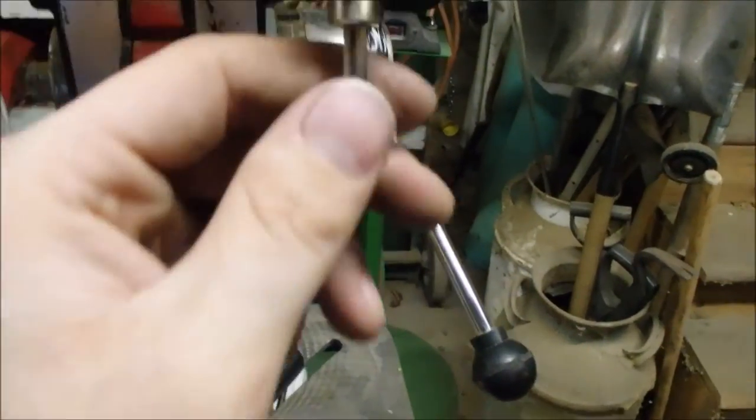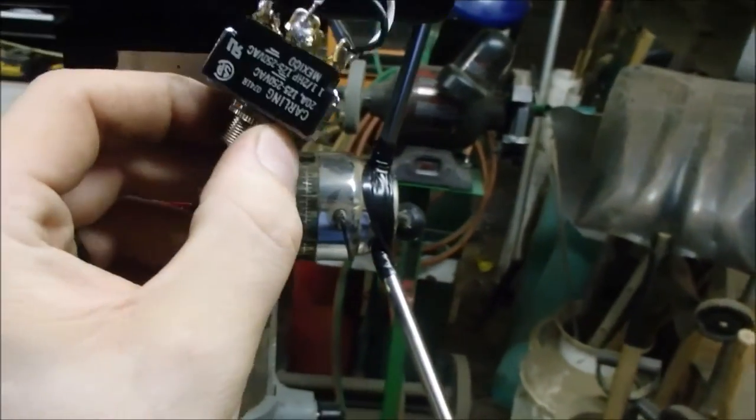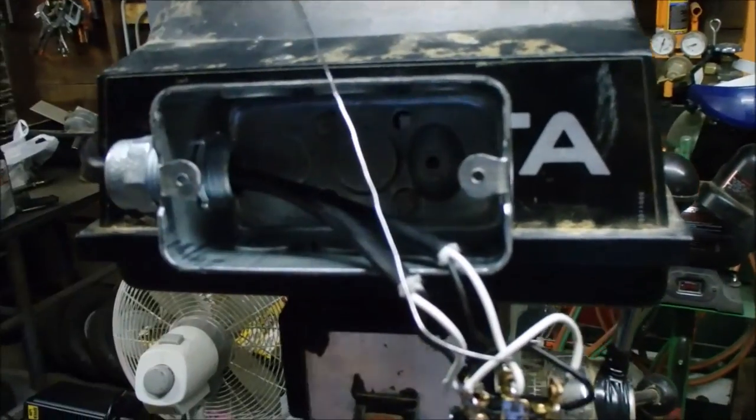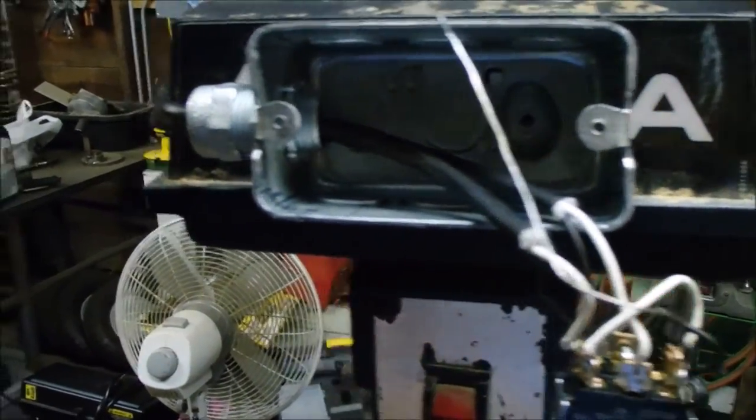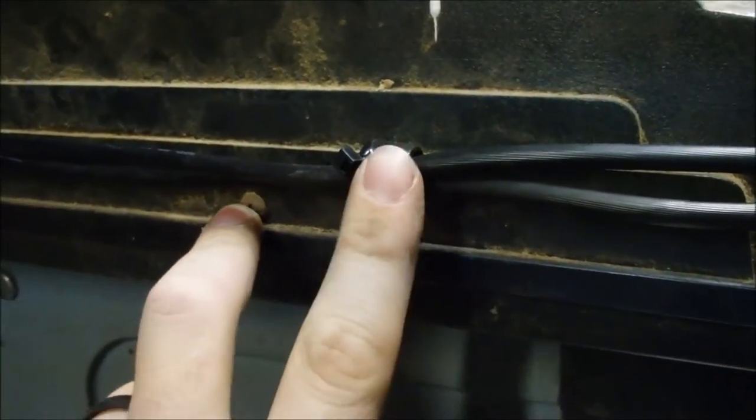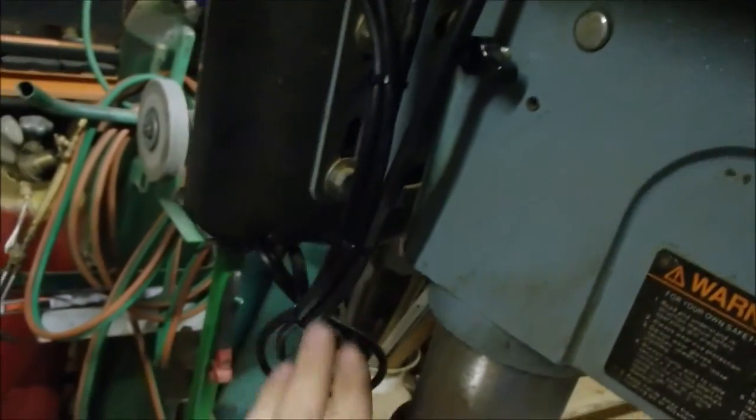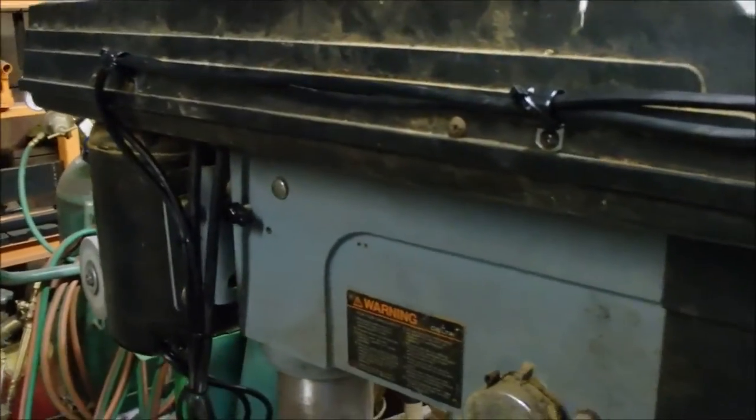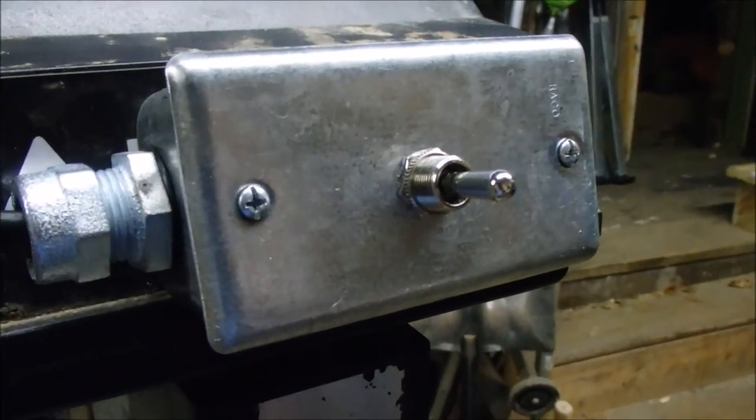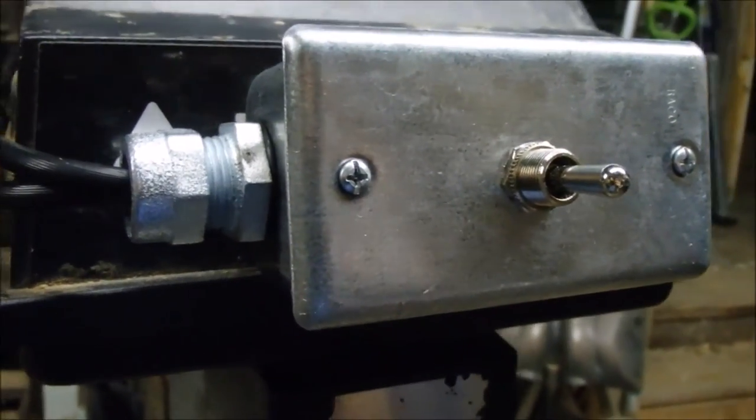Now all we have to do is drill a hole in this plate to match the size of our switch here, and then put the switch in the cover, put the cover on here, fire it up and try it. Oh, make sure you put your motor cover back on. You can hold cables in place in clamps that are too big with zip ties - throw a couple more zip ties on it and it cleans it up real nice. I suggest using a step bit to go through sheet metal.